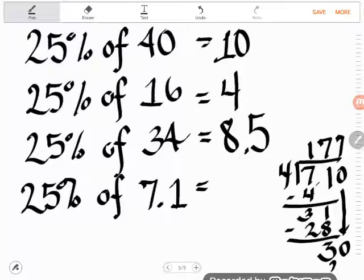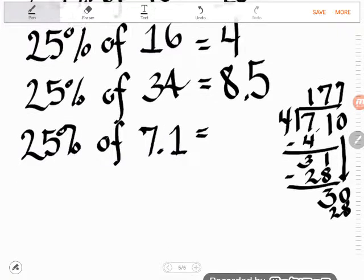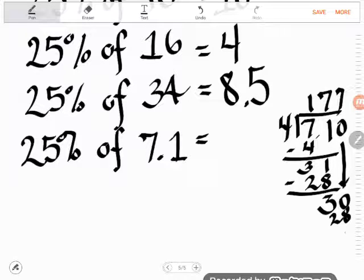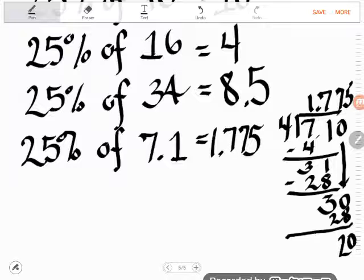Four goes into 30 seven times again. And not perfectly, though. That's 28. Remainder two, and I, again, can have another zero. Four goes into 20 five times. Remember to raise up your decimal place, and it's a long, nasty answer, but nonetheless, 25% of 7.1 is 1.775.